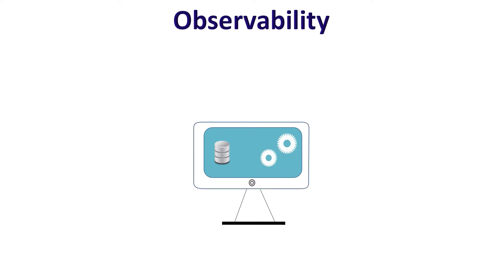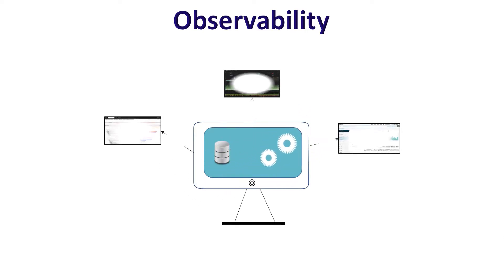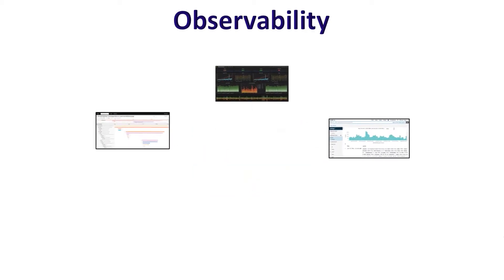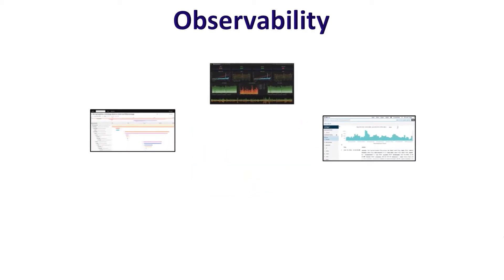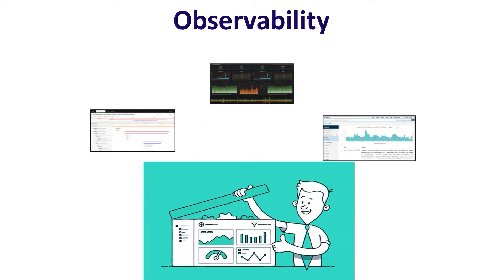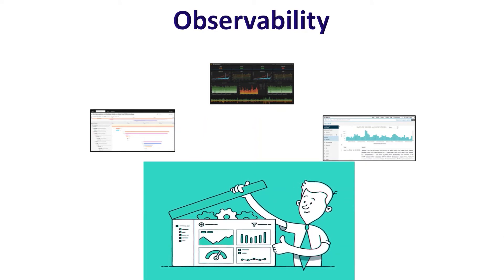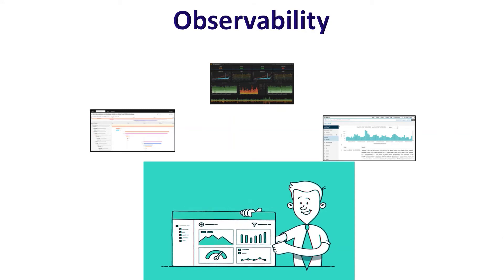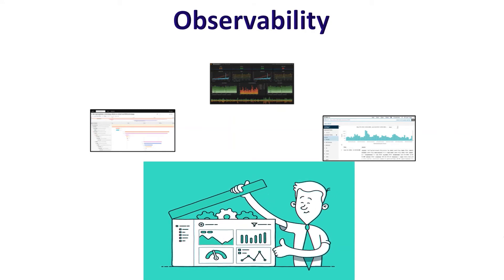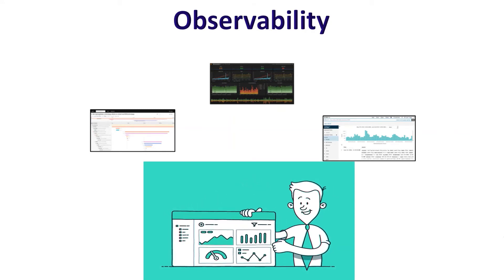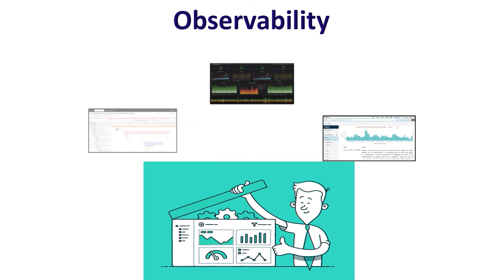So what is observability? Observability is defined as the ability to determine the internal state of a system by its external outputs. Or put another way, if from the data generated by a system we are able to interpret the state of the system's components or internal state, then that system is called an observable system. This system-generated data can be anything — maybe some metrics, logs, or traces.